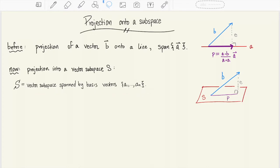I like to imagine my vector being projected down into a plane for this. In the case of projection onto a line we use the vector a in a really explicit way. It shows up in these two dot products and it also shows up here. So how are we going to use the basis vectors a1 through an when we want to project into some other vector space S?